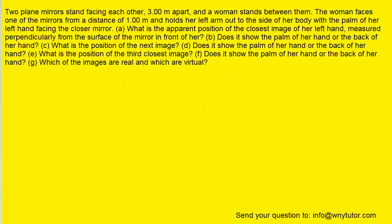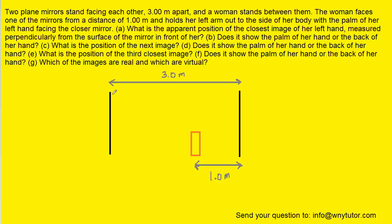If you haven't done so yet, please pause the video and try to solve the question before listening on. To solve this question we're going to begin by drawing a picture. Here we have shown the two plane mirrors by the black lines, and they're separated by three meters, and then we have the woman's hand, which we just represented as a simple rectangle, situated one meter from the nearest mirror.